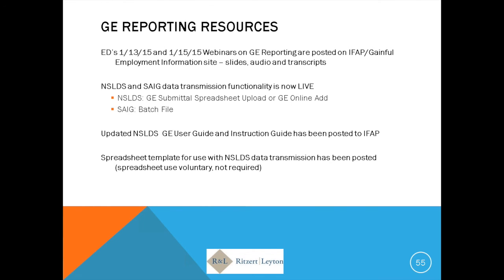Final question: if a student is enrolled in a diploma program and then continues into an associate program with the same SIP code, will additional tuition fees be split between the two programs or combined based on the associate-level completer?